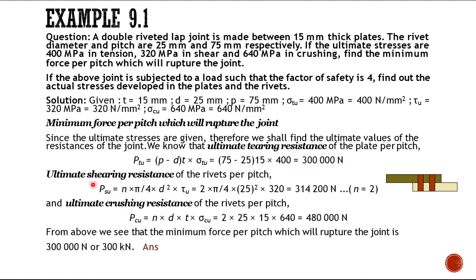For shearing, the formula is n × (π/4) × d² × tau_u. Since it is a double riveted lap joint, n = 2. So: 2 × (π/4) × 25² × 320 = 314,000 N, or 314 kN, which is slightly higher than PT.